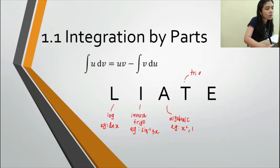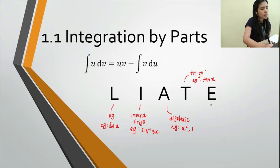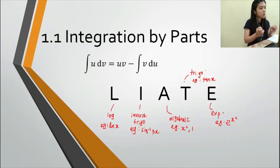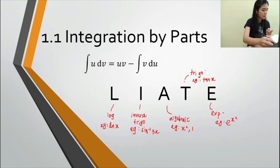Then we have T for Trigonometric functions, and E for Exponential — for instance, eˣ. When using integration by parts, you follow this sequence. Whichever term appears first in LRATE becomes your u, and the one appearing later becomes your dv.